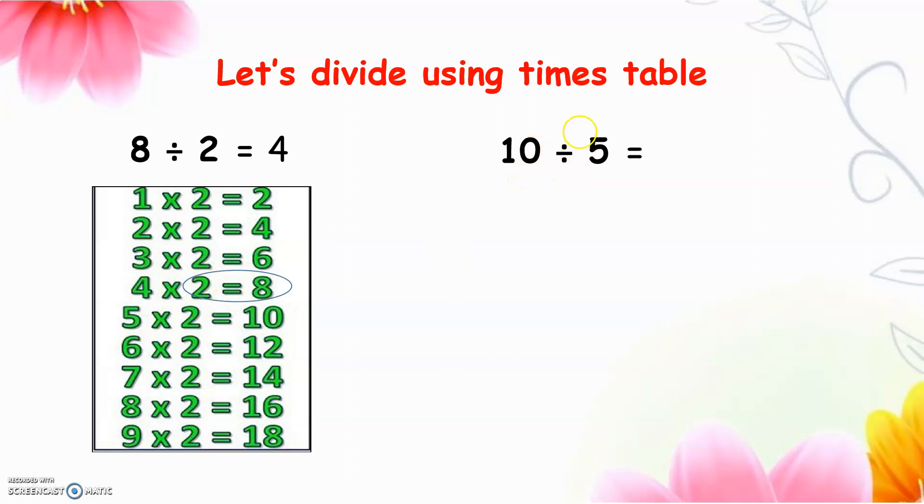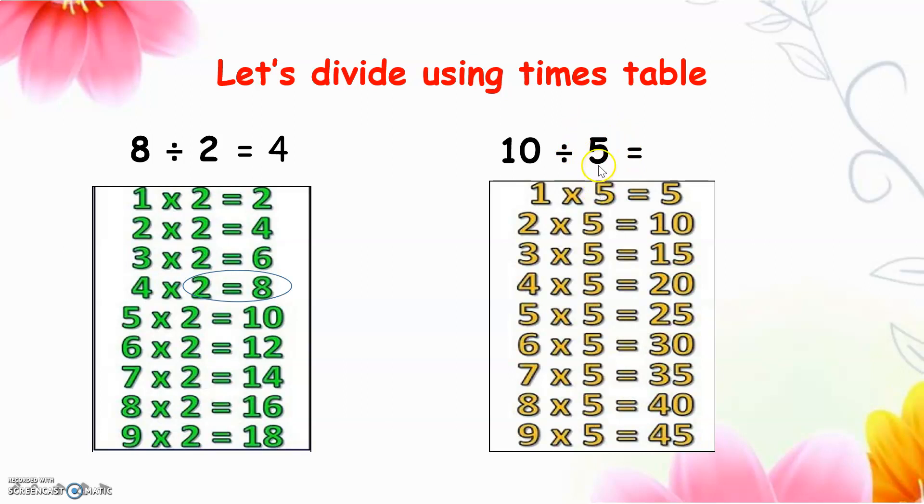The second question: 10 divided by 5. We will use times table 5, and then we should find the product. 10 divided by 5 equals to 2.